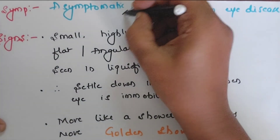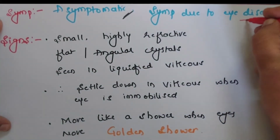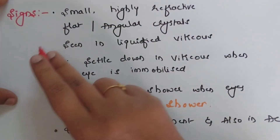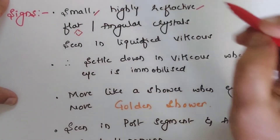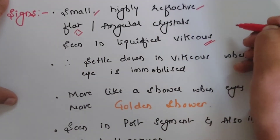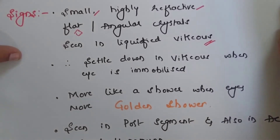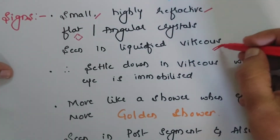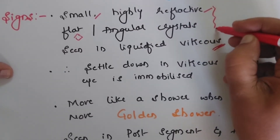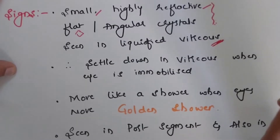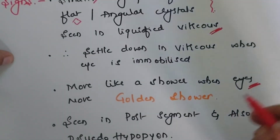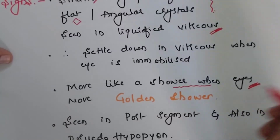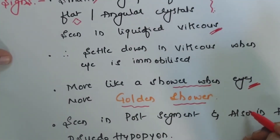The disease is asymptomatic, but the patient may experience symptoms due to the underlying eye disease. The cholesterol crystals are seen as small, highly refractile, flat or angular crystals in the liquefied vitreous. Unlike Asteroid Hyalosis, there is vitreous liquefaction here due to the underlying ocular disease. Since the vitreous is liquefied with no collagen, all crystals sink down due to gravity. When the eye moves, they move like a shower of golden crystals — this is called the 'golden shower,' which is typical of Synchisis Scintillans.